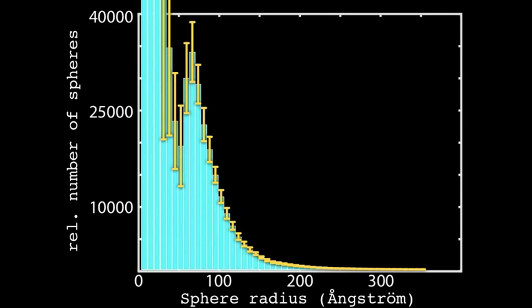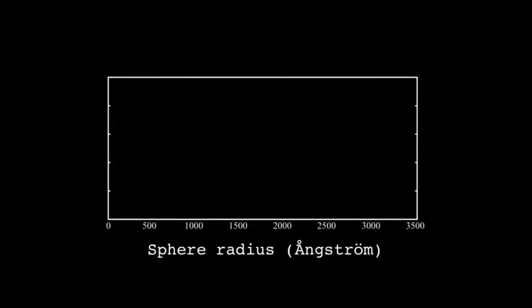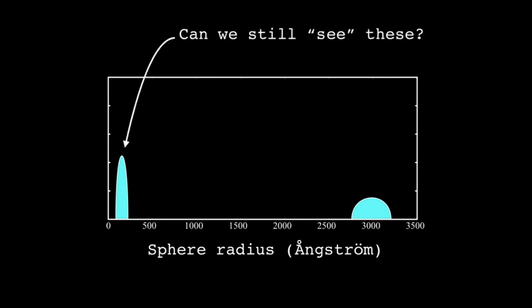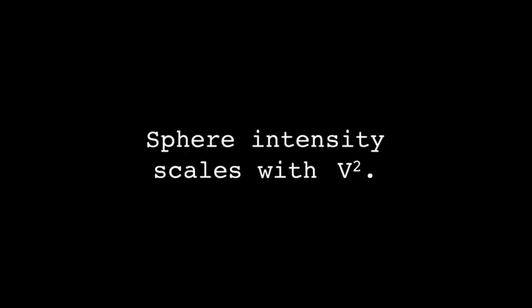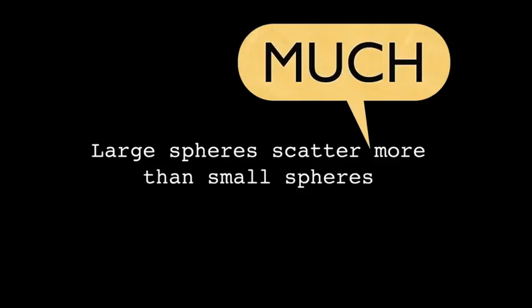This story came about when one of us showed a distribution with a population of a rather large size and a very small population, which raised the interesting question of whether we can still see these particles — because, as you are probably aware, the sphere intensity scales with the volume squared, meaning the radius to the sixth power. This means that large spheres scatter much more than small spheres and might drown out information about the small sized particles.